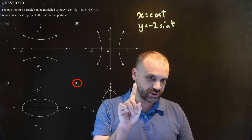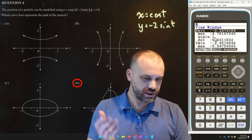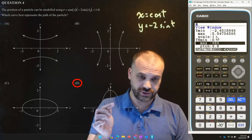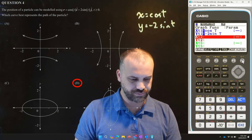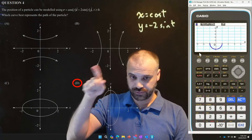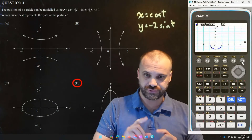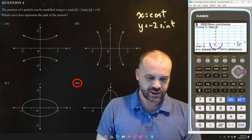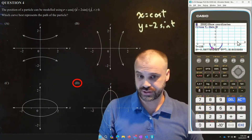I want to talk about the calculator just a little bit longer. If you click on your view window, you get minimums and maximums as usual, but you also get minimums and maximums for your t value, which is important. If I set it from 0 to 180 and draw that, I get half of my circle because it's only travelling from 0 to 180. You can also use the trace function to trace time, x-coordinate, and y-coordinate — very useful when dealing with vector equations.